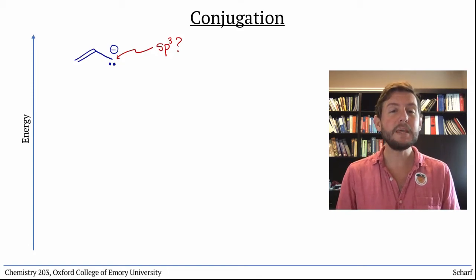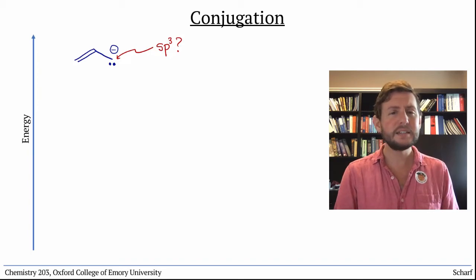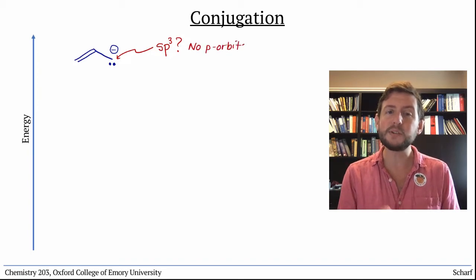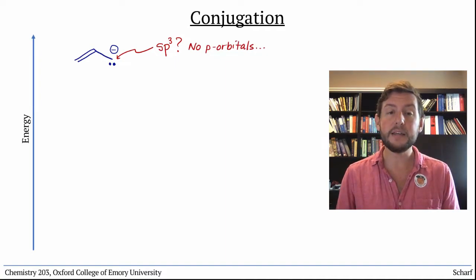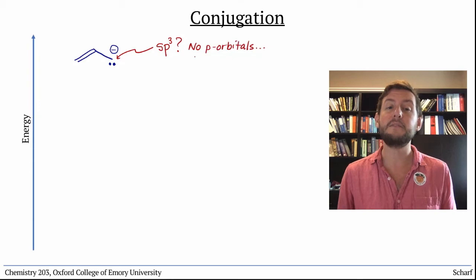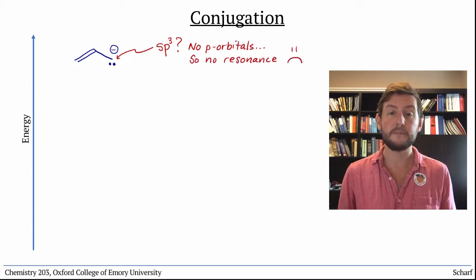But an sp3 hybridized atom doesn't have any p orbitals to conjugate with. So if it was sp3 hybridized, it wouldn't be able to take advantage of resonance stabilization, which it would very much like to do.